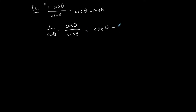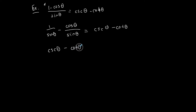Once you choose a side, you only touch that side — you never touch the other side or multiply across the equal sign. The right side stays as is; it's your ultimate goal. If you notice, 1 over sine of theta equals cosecant of theta by the reciprocal identity, and cosine of theta over sine of theta equals cotangent of theta by the quotient identity. Therefore, I've verified my identity — the left side now looks like the right.